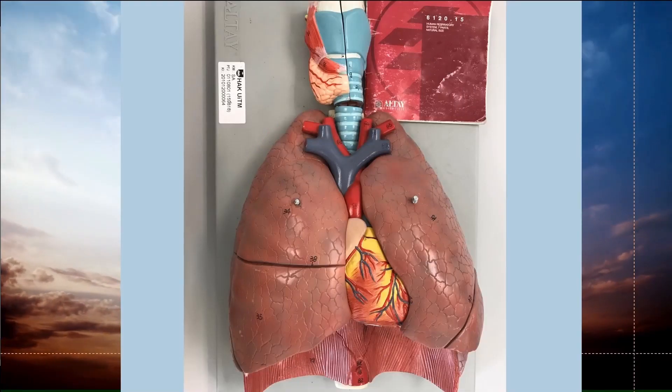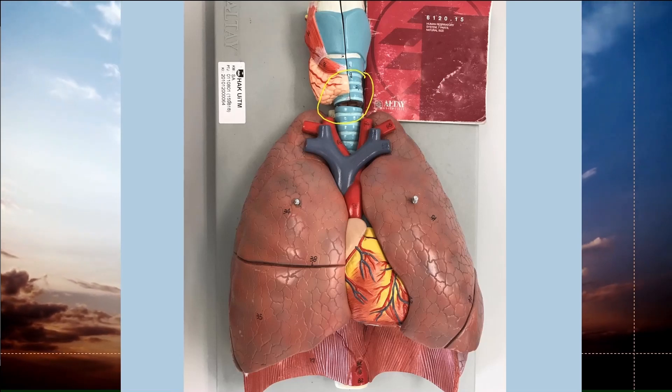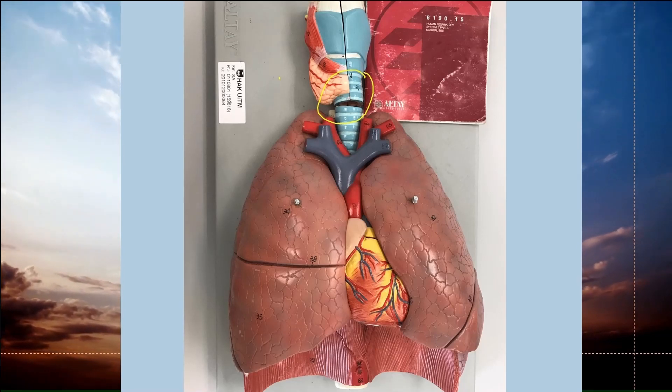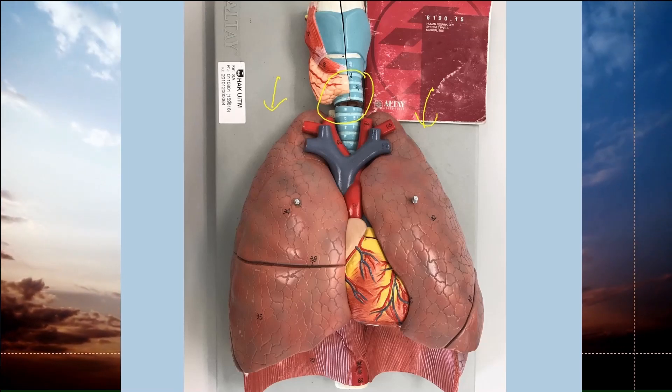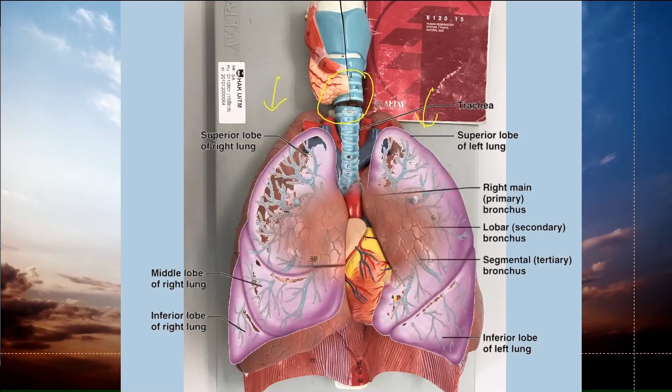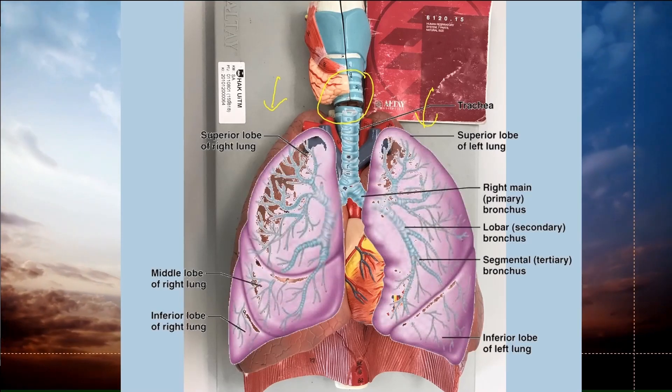This is the human respiratory model. As you can see here, this is the trachea. The trachea has cartilage to keep this part open. Humans have two lungs, the right lung and the left lung. The trachea is connected to the bronchi.